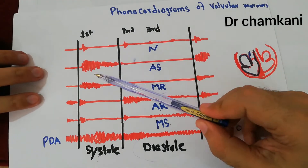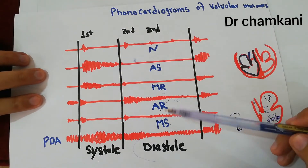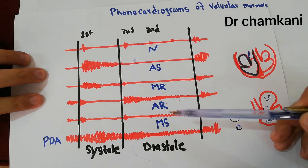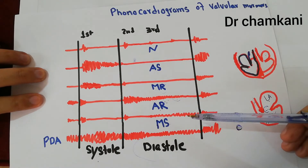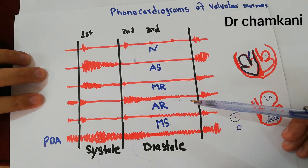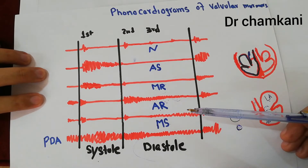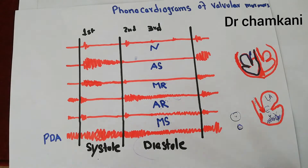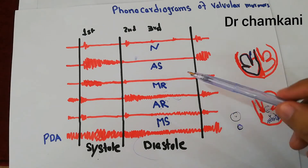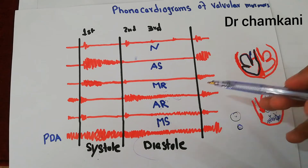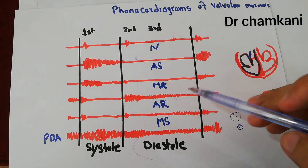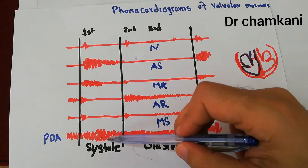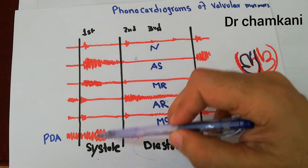The loudness of aortic stenosis is very high. The loudness of mitral regurgitation and aortic regurgitation are also higher. But the mitral stenosis murmur is very difficult to hear initially — only at the end of diastole can you hear a rumbling sound with very low loudness. The timing of the mitral stenosis murmur is in the diastole; there is nothing heard in the systole.